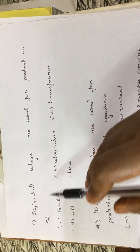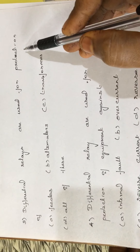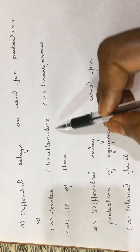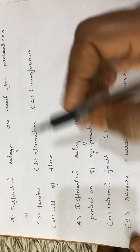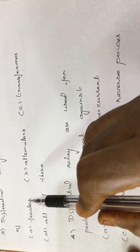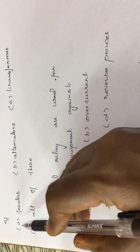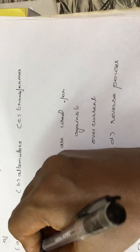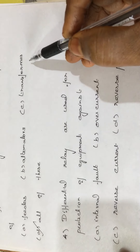Question number 3: differential relays are used for protection of feeders, alternators, transformers, and all of the above. The differential relay provides a phase difference protection. So if there is a phase difference in any case — whether in a feeder, alternator, or transformer — the differential relay acts. So the differential relay protects all these cases.